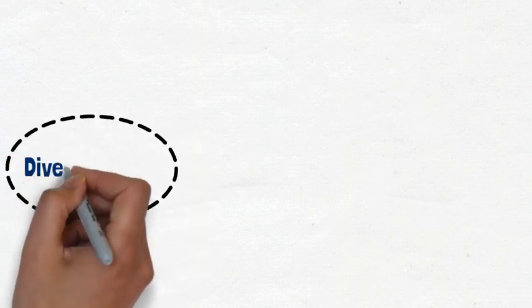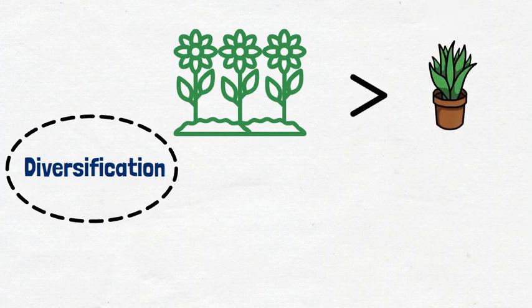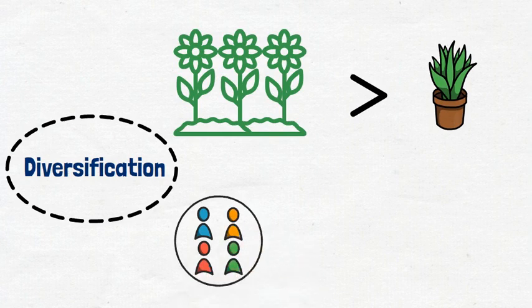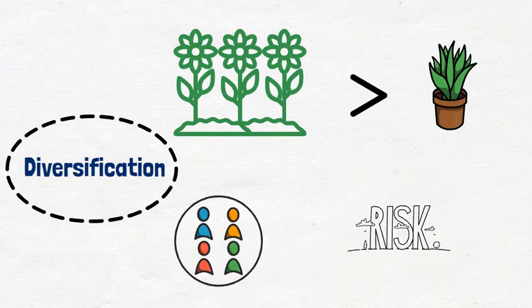Both crypto and stocks can benefit from diversification. Just as a garden with a variety of plants can provide more benefits than a single plant, investing in a diversified portfolio of crypto or stocks can help reduce risk and exposure to any one company or token.